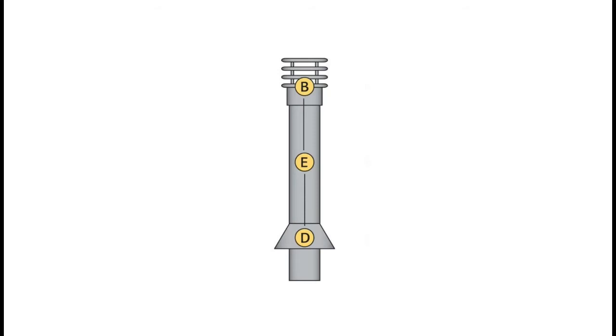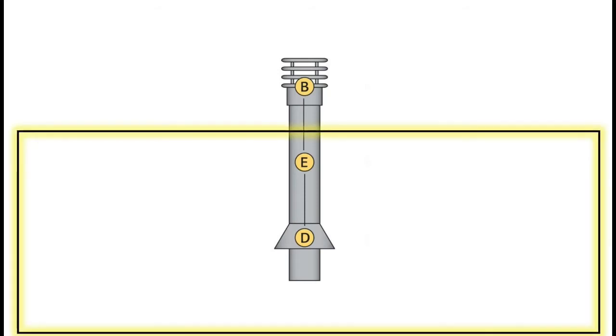How this affects your flue operation is this. If you imagine the base of the flue at the appliance, position D in this photograph, is inside the room and the terminal, B, is outside the room, we can demonstrate the effect that different pressures have got.